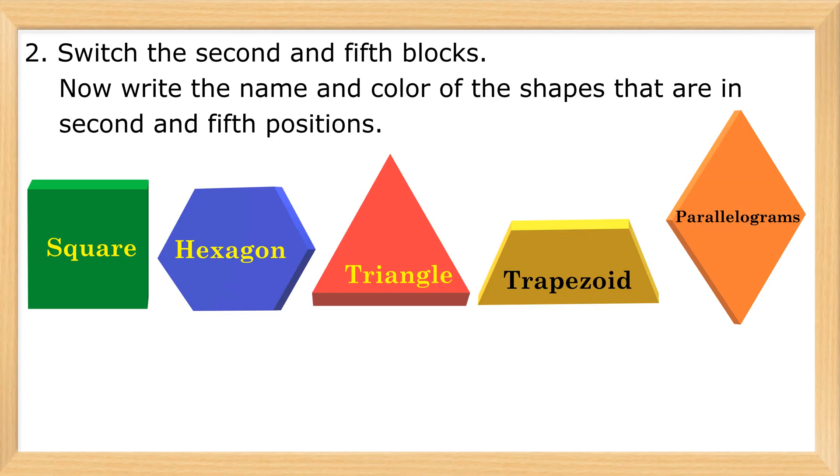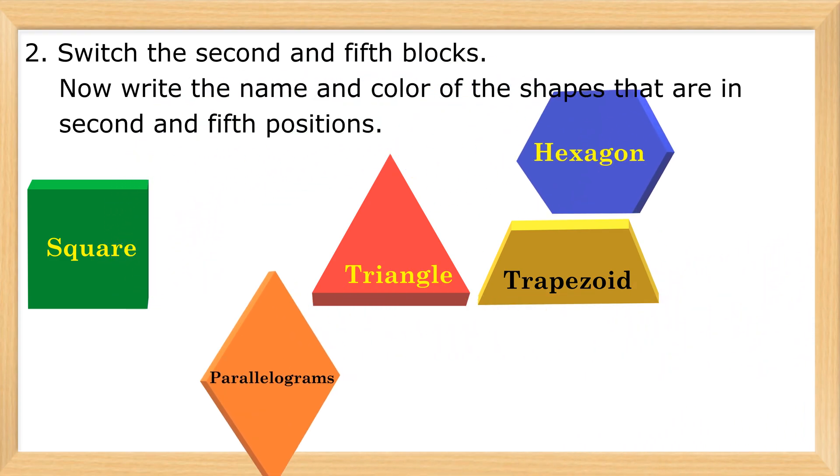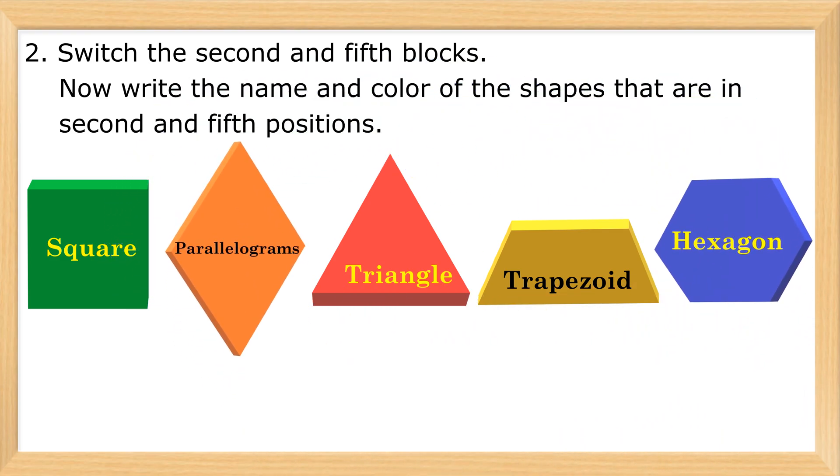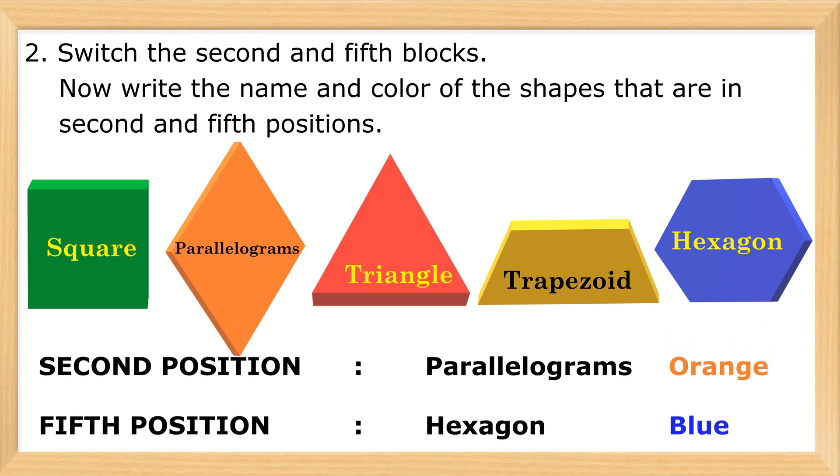Switch the second and fifth blocks. Now write the name and color of the shapes that are in second and fifth positions. Second position: parallelogram, orange. Fifth position: hexagon, blue.